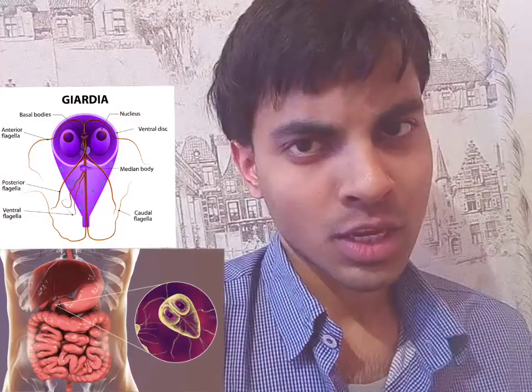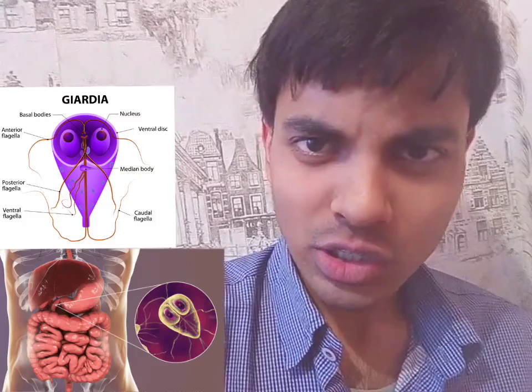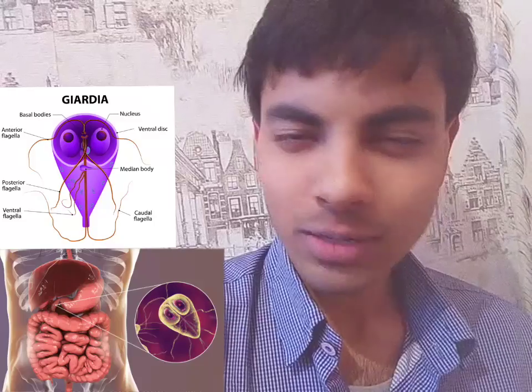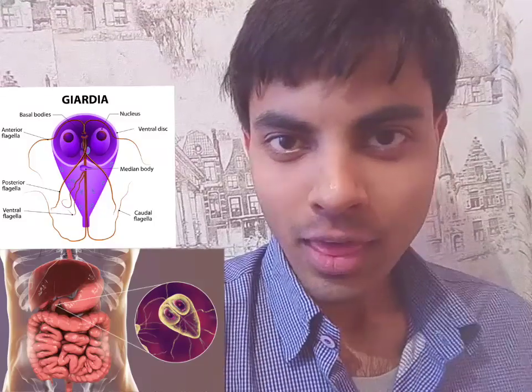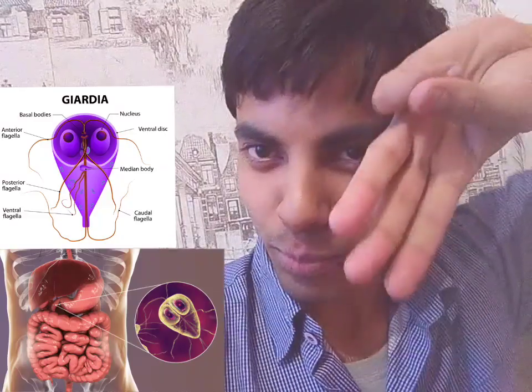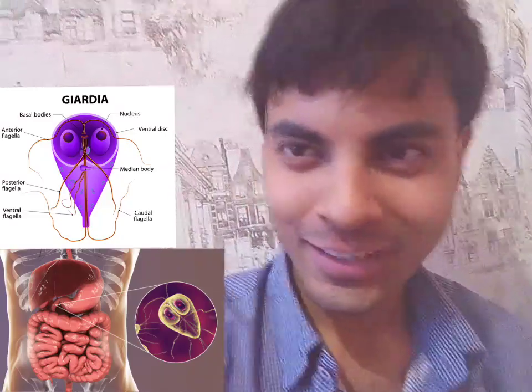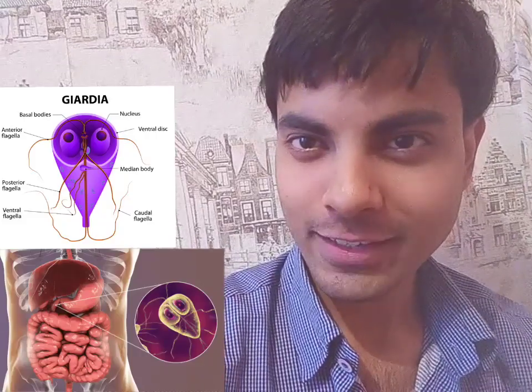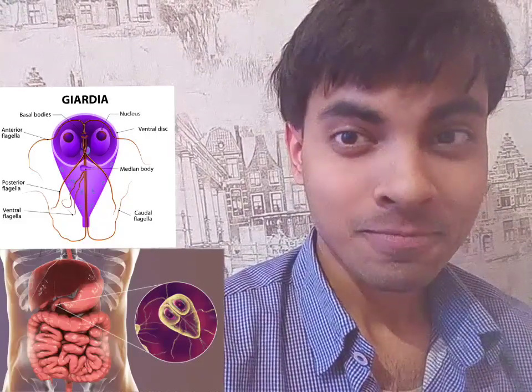How to identify Lamblia intestinalis? They are easily observable because in trophozoite form they have these flagellum coming off. I will put the picture here so that you can see they are very interesting creatures.